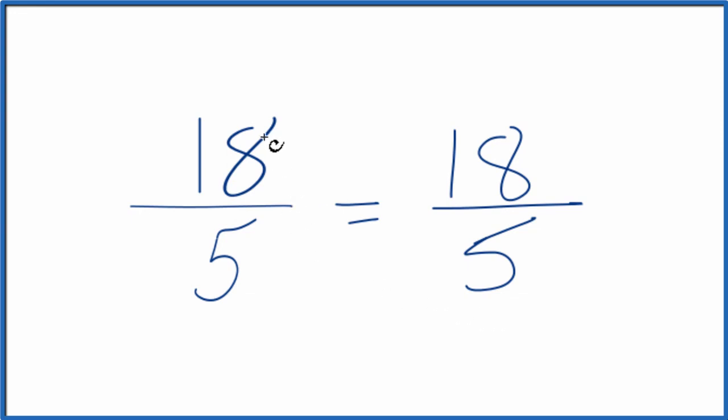What that means is that 18 fifths is already simplified. It's already in lowest terms. We can't reduce it any further.